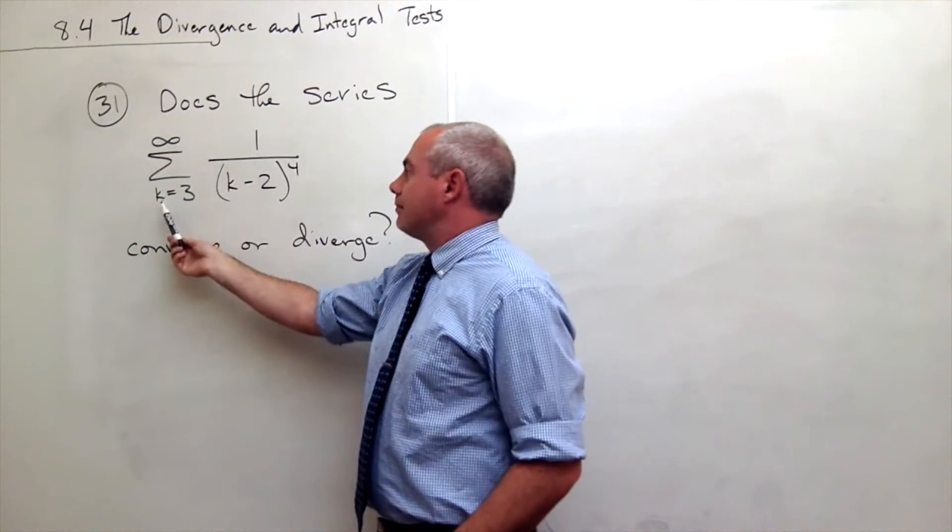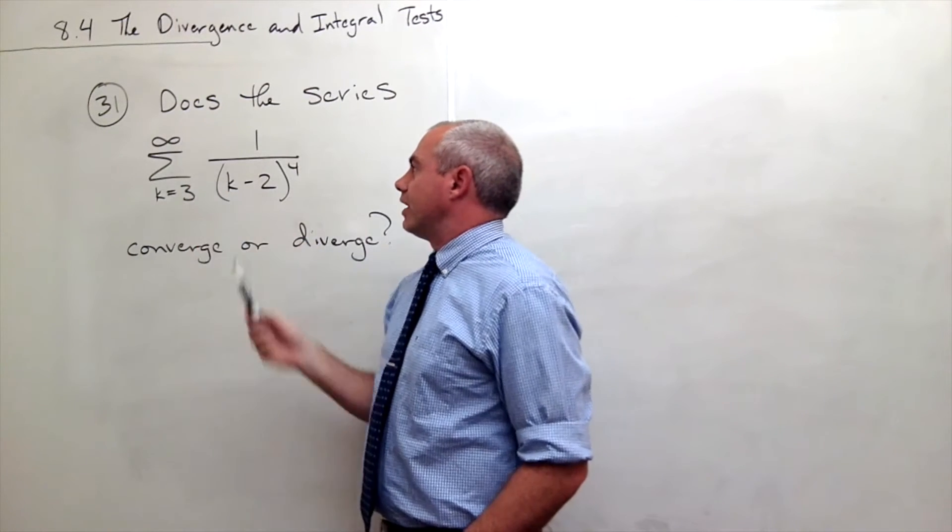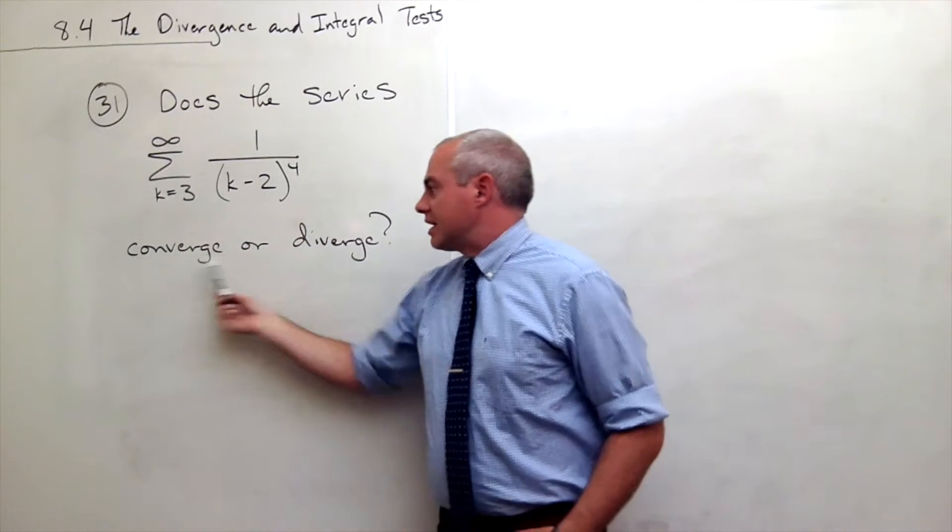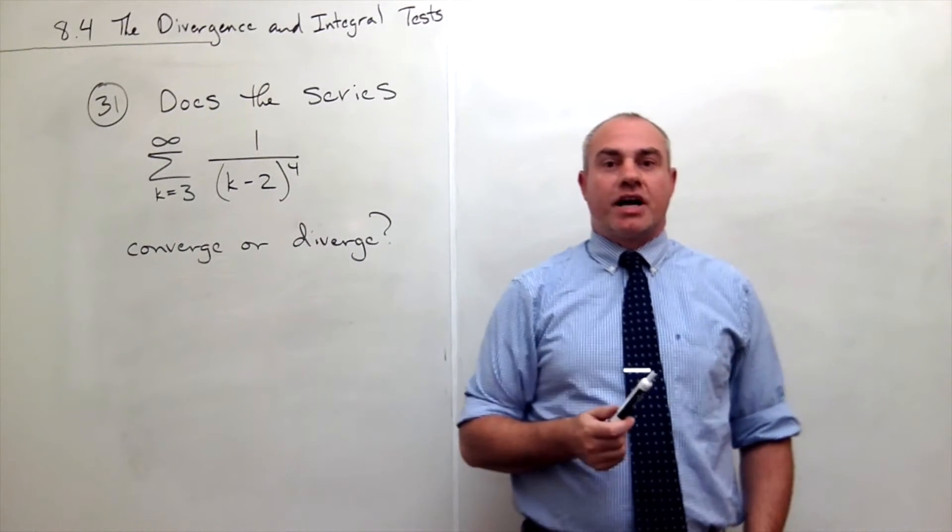Does the series sum k going from 3 to infinity of 1 over (k minus 2) to the 4th, does that series converge or diverge?